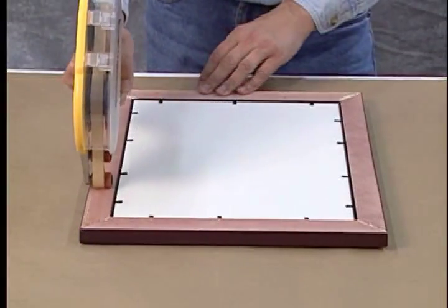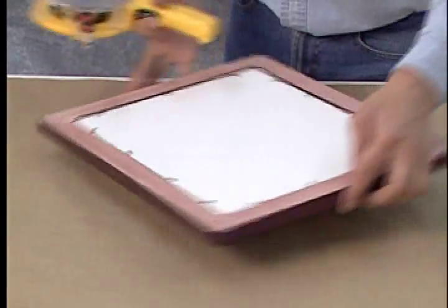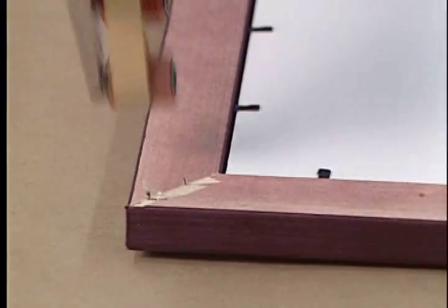Most professionally mounted artwork has backing paper applied to it. To do this, apply double stick tape all around the back of the frame. Double stick tape and their dispensing guns can be found at most art supply and craft stores.